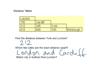Finally, which city is furthest from London? I look down the London column and find the largest number. The largest number is 413, and that lines up with Edinburgh. So the city which is furthest from London is Edinburgh.